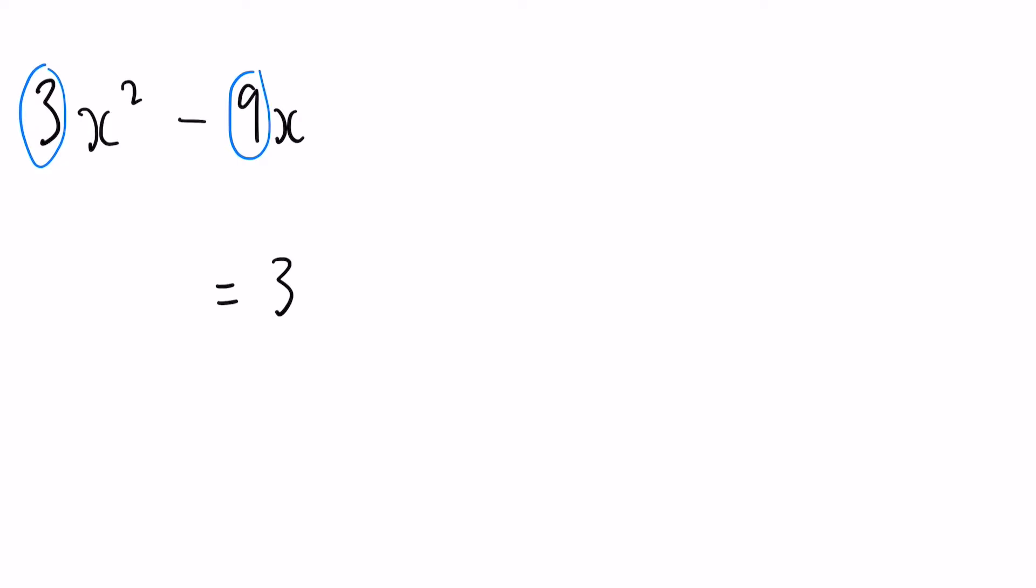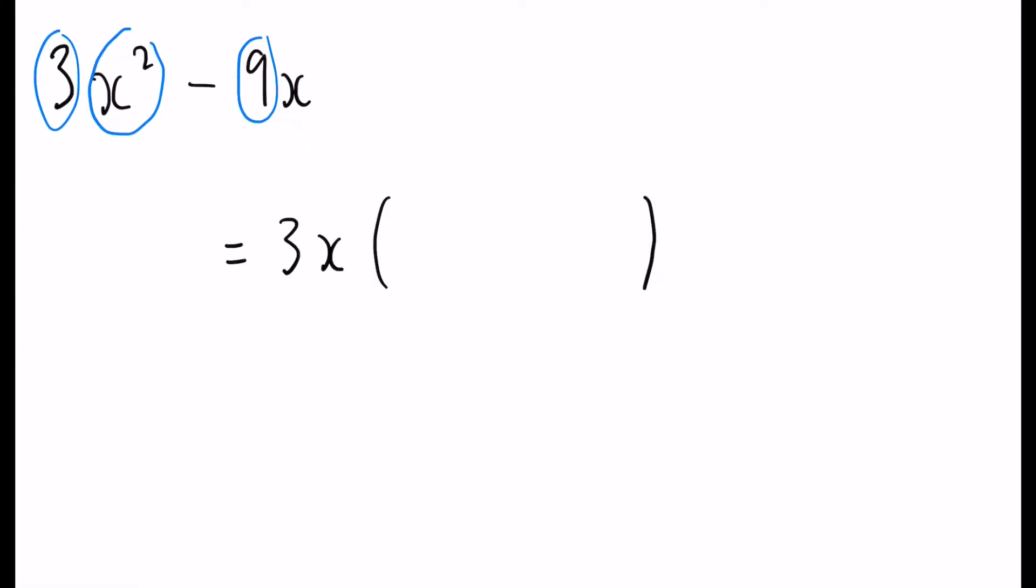This time we also have a letter that is common in both. We've got an x squared, or you can imagine it as kind of 2 x's, because it's 3xx. And we've also got an x with the 9. Out of this, we can take another x on our outside of the bracket. And you want to set up your bracket just like this.